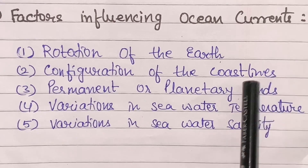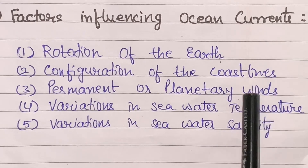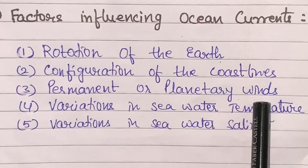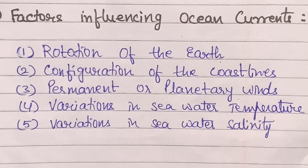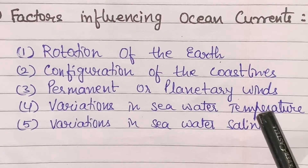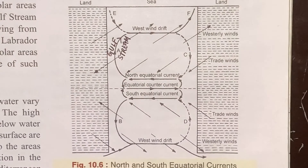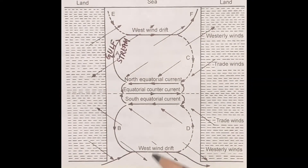The friction of winds on the surface of water causes the water to move. In whichever direction the wind is blowing, the surface water of the ocean also flows in that direction, as is clear in this diagram.